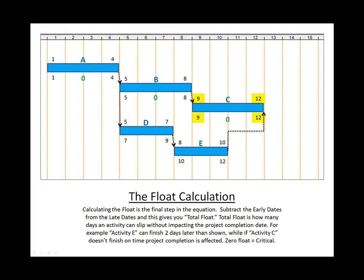If we look at D, you'll notice that the early dates and the late dates are different. If we subtract the early dates from the late dates, we get two days of total float. Same with activity E. If we take the early away from the late, we end up with two days. Zero equals critical, so that means activities A, B, and C are our critical path.